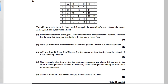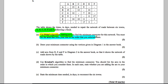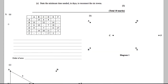This question is a minimum connector problem. The table shows the time in days needed to repair a network of roads between six towns, A, B, C, D, and E, following a flood. We must use Prim's algorithm starting at A to find the minimum connector for this network. The network is not drawn; we are given the matrix in the exam book, so we'll use the matrix form of Prim's.